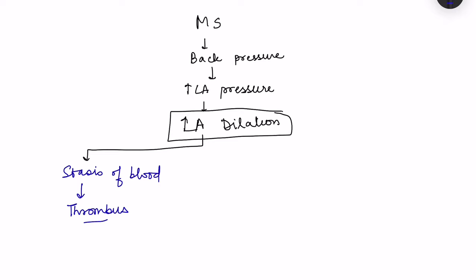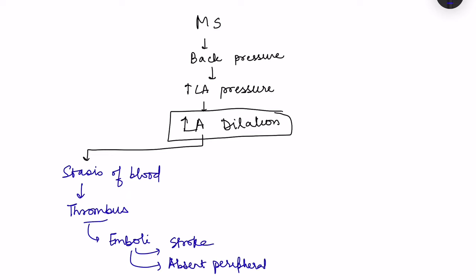Thrombus may ultimately lead to formation of emboli — small portions break down forming emboli which can go and block various vessels in the body. These can block cerebral vessels leading to stroke, or block other vessels of the body so that when we palpate peripheral pulses, they may be absent. So emboli formation leads to absent peripheral pulses.